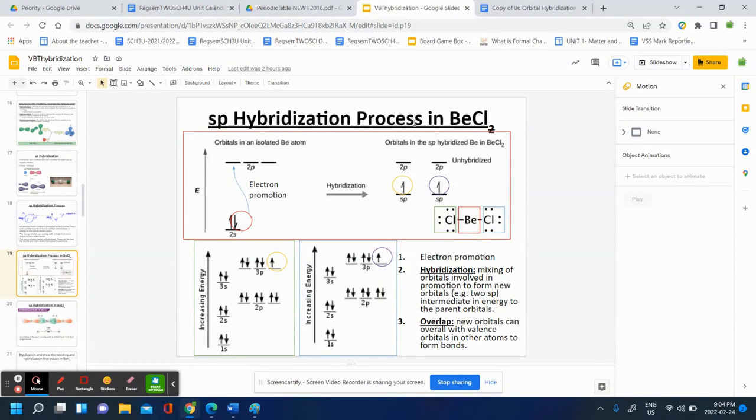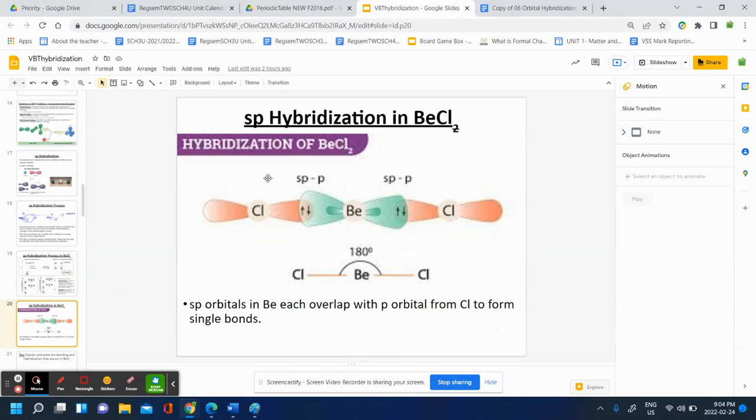So you should be able to do examples of SP hybridization and show that process. So if you can practice that by doing BCL2, show the energy level diagram, show the hybridization process, and show the mixing, and then as well as all the overlaps, then you're in some pretty good shape.